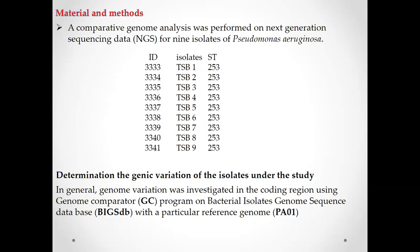Materials and methods: Comparative genome analysis was performed using next-generation sequencing for nine isolates. We collected isolates belonging to the same serotype ST 253 because we are investigating genomic variation at the level of micro-evolution. We determined the genetic variation of the isolates using the Genome Comparator program, hosted in the Bacterial Isolate Genome Sequence Database. This program BLASTs each gene in the reference genome PA01 against each gene for the target isolates, and detects whether genes are variable or similar — whether there is a change in the gene or nucleic acid sequence.